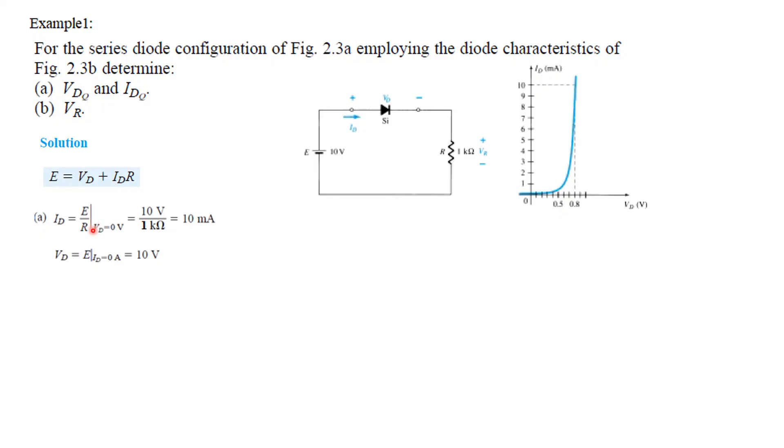Id is E over R. E is 10 volt from here. R is 1 kilo. So our extreme point on the current line is 10 milliampere. Similarly Vd we put Id 0. So Id 0 means this term becomes 0. So Vd is equal to E and E is 10 volt. So we have got the two extreme points. We draw the load line, 10 milliampere and 10 volt and we connect.